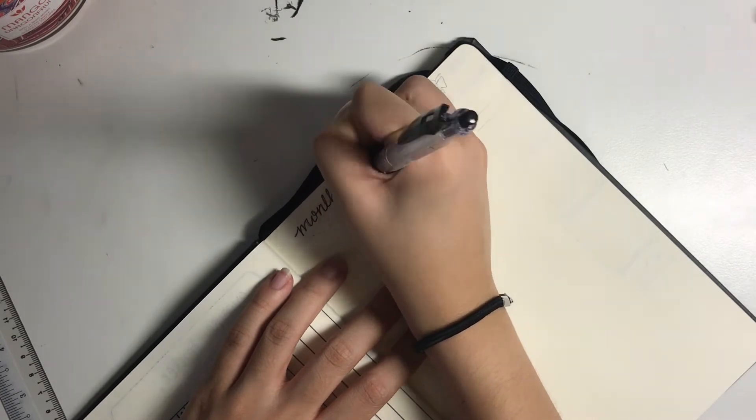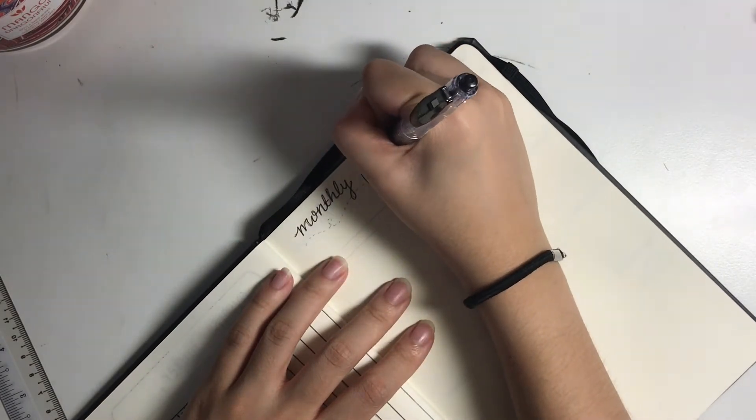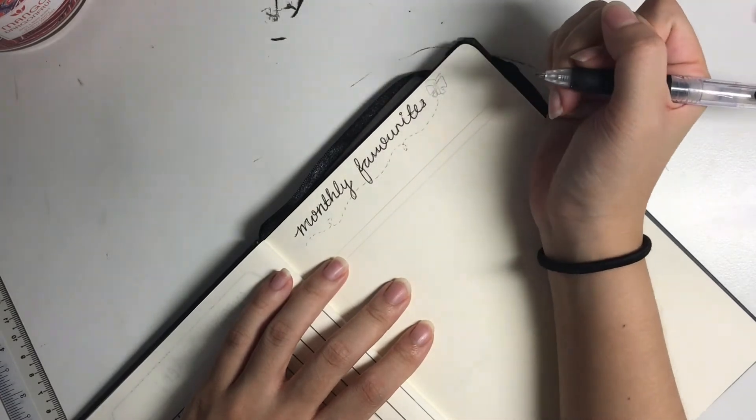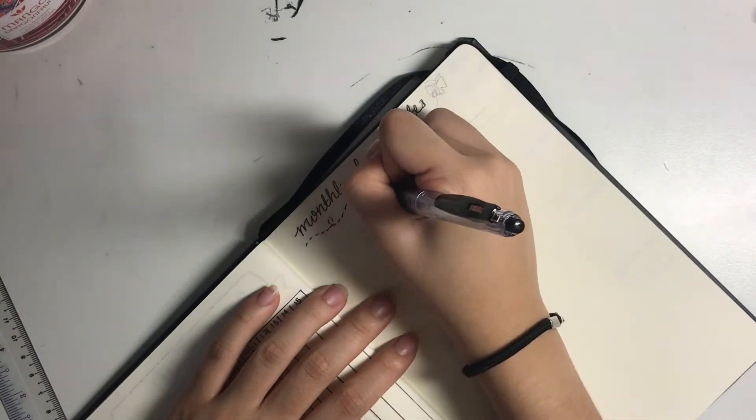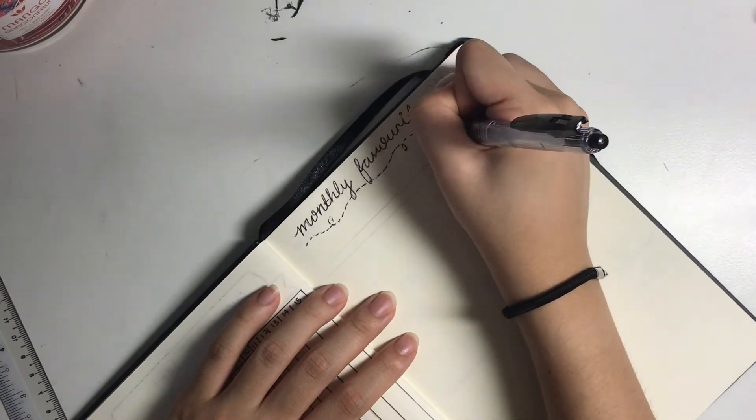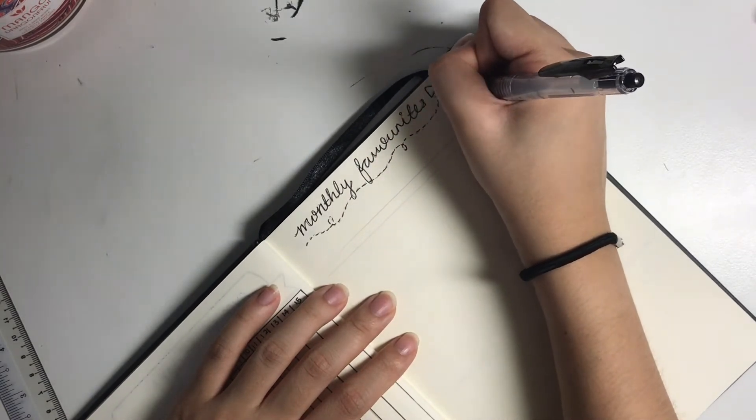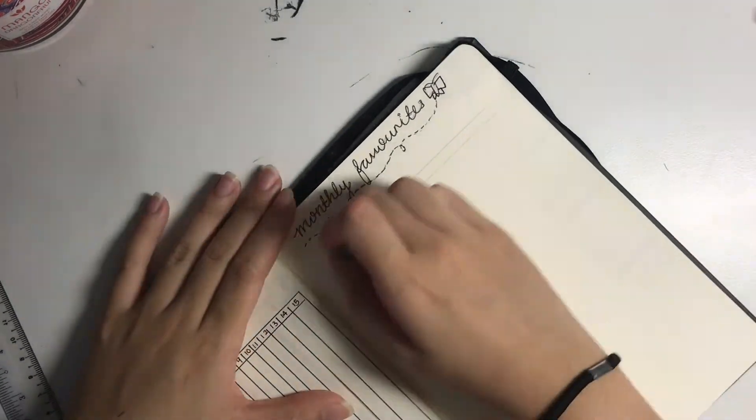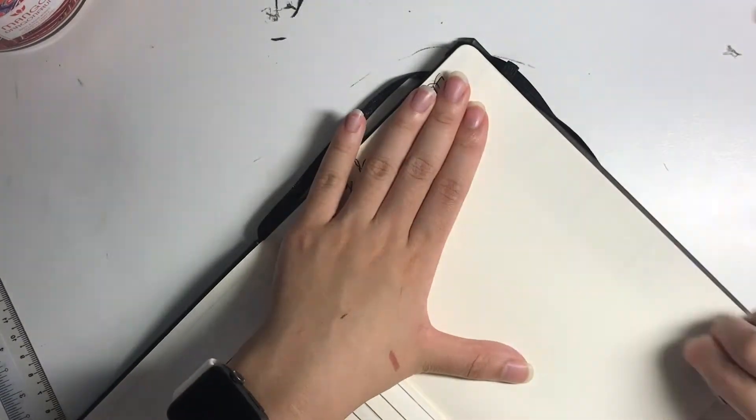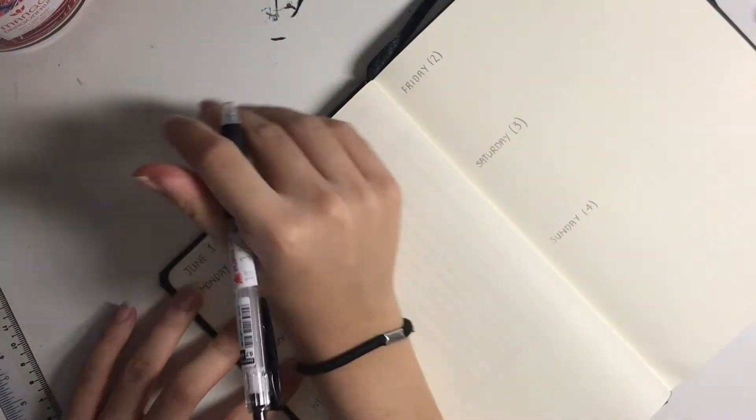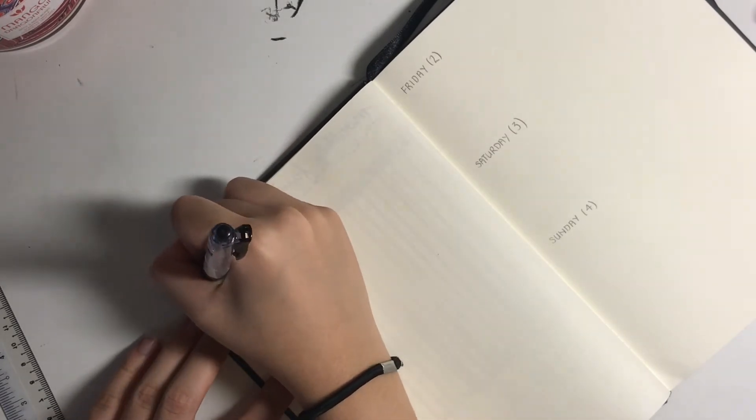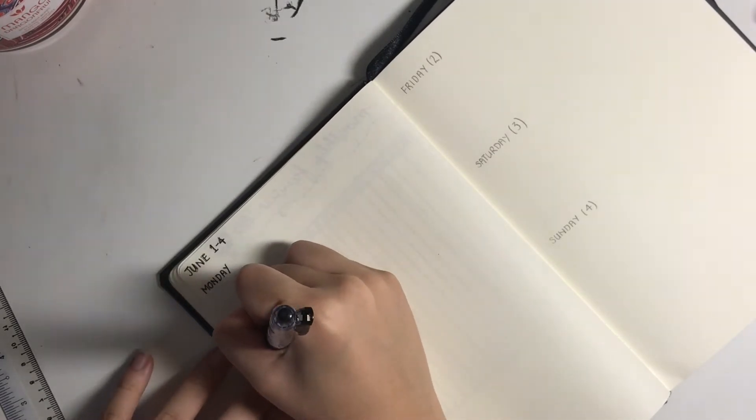On the page next to it I did my monthly favorites. So this is something new and I decided to do this because I have a blog. I've discovered that this is really handy because every month I write about my monthly favorites. If you like, I have a link down below on my April favorites. My May favorites should be out very soon. But yeah, I thought that would be really handy for me so I don't lose track of what I enjoyed.